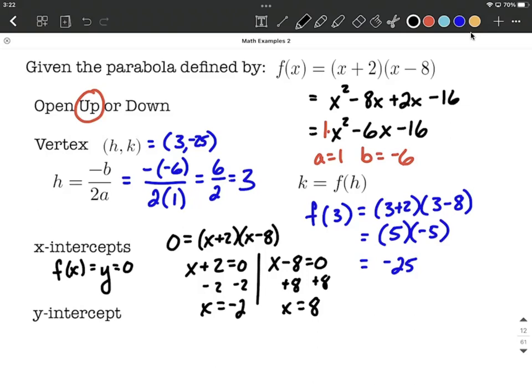Sometimes we want to write these x-intercepts as ordered pairs. So as ordered pairs, that would be an x value of negative 2 and a y value that we substituted in as 0, and then a second one at 8 for our x value, 0 for the y value. Those are our two x-intercepts.